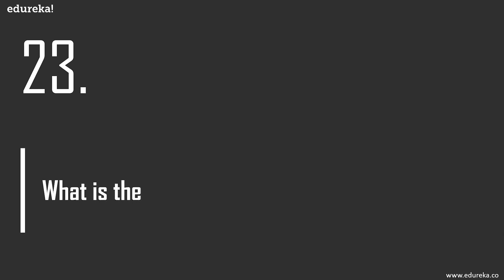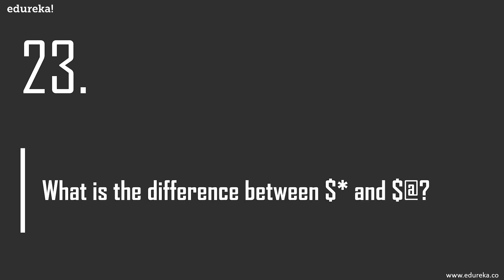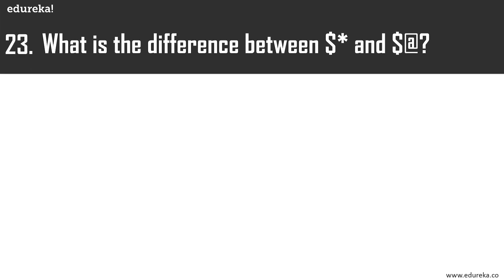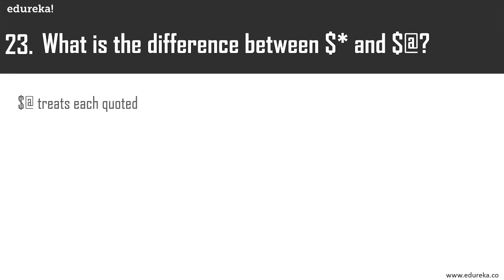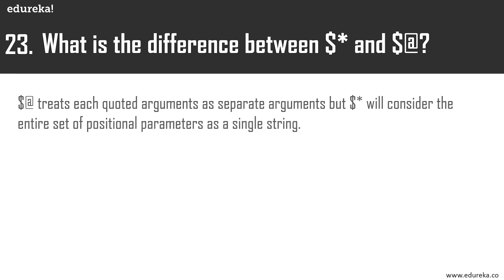What is the difference between the special variables $* and $@? Their meanings are identical when not quoted. However, when used as a command argument, $@ treats each quoted argument as a separate argument, while $* considers the entire set of parameters as one single string. So passing a sentence: $@ prints each word on a different line, while $* prints the entire sentence on one line.